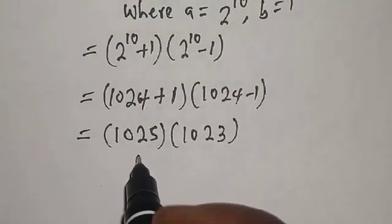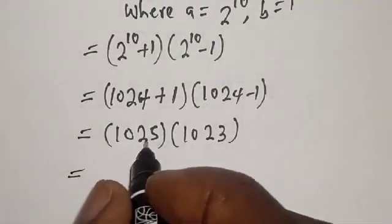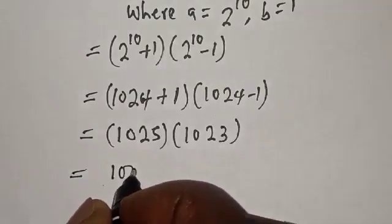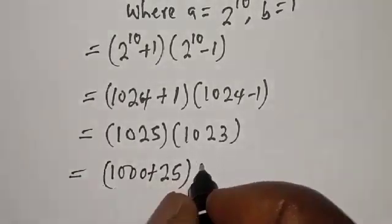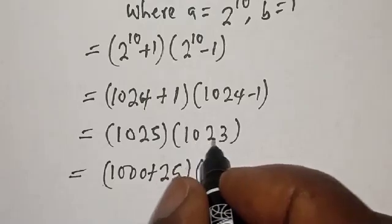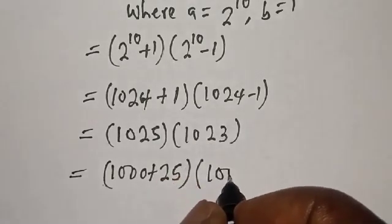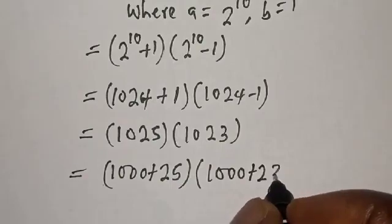Now let's see. 1025 can be written as 1000 plus 25. 1025 multiplied by here, 1023 can be written as 1000 plus 23.